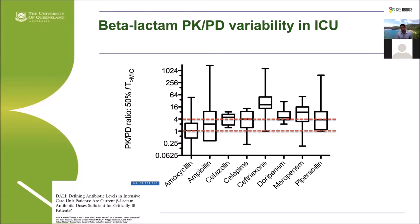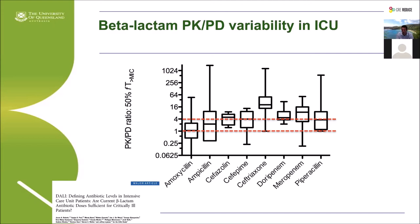When we look at the concentrations that manifest in critically ill patients, this is data from the DALI study — a point prevalence pharmacokinetic study conducted in 450 critically ill patients, with data for 380 patients receiving a beta-lactam antibiotic. Looking at the PK-PD ratio — the drug concentration midway through the dosing interval versus the MIC of the known or suspected pathogen — there is a huge level of pharmacokinetic variability, and many patients didn't achieve even a minimum therapeutic concentration, with those patients three times more likely to fail treatment.